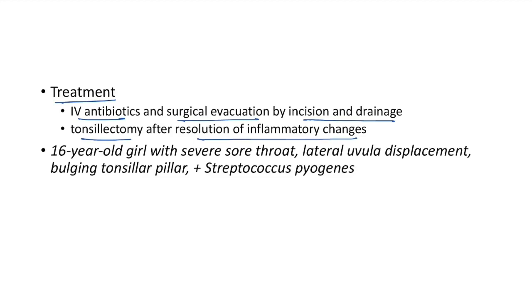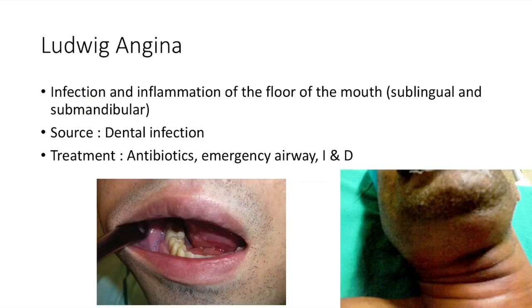A classic case of peritonsillar abscess: a 16-year-old girl with severe sore throat, lateral uvula displacement, bulging tonsillar pillar, and positive for Streptococcus pyogenes.